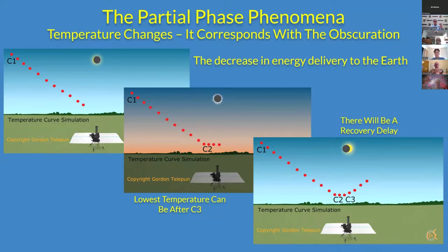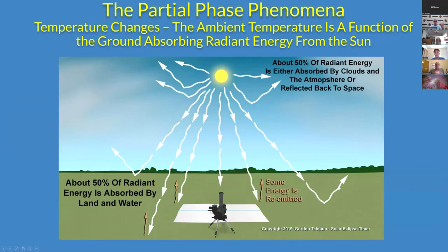The temperature doesn't have to be lowest during totality — it can actually drop a little more after C3, and then there'll be a recovery delay. The temperature doesn't go immediately back up because the Earth has to start reabsorbing radiant energy. All energy from the sun travels through space, but about 50% gets either absorbed or reflected by the atmosphere, so only about 50% is absorbed by the Earth to change ambient temperature at ground level and affect weather.